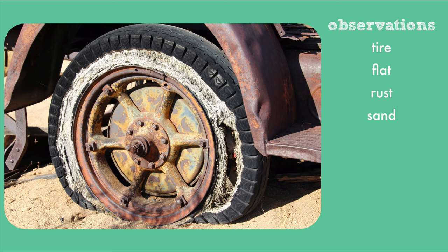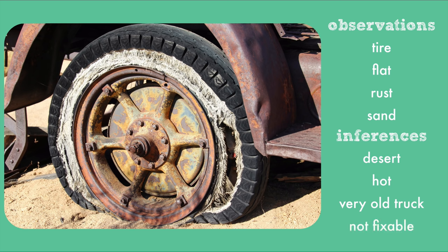Now I'll state some inferences that I've made about this picture. Based on the sand, I think this might be in the desert, which makes me also think that it's very hot there. I think it's part of a very old truck because of the way the wheel well looks. And I'd also infer that the tire is not fixable because of the white threads that I can see on the edge of the tire. Those are all inferences.